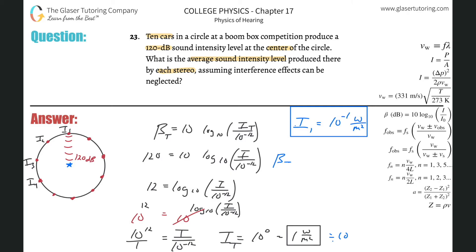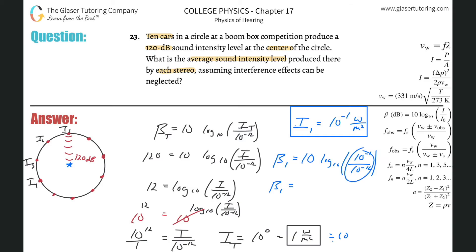So beta, the decibel value of one car, equals 10 times log base 10 of the intensity of one car — which is 10⁻¹ — divided by the threshold of hearing, 10⁻¹². That gives 10⁻¹ divided by 10⁻¹², so the exponent is minus one minus negative 12, which equals plus 11. So that's 10¹¹. The log of 10¹¹ is 11, and 11 times 10 equals 110 decibels.